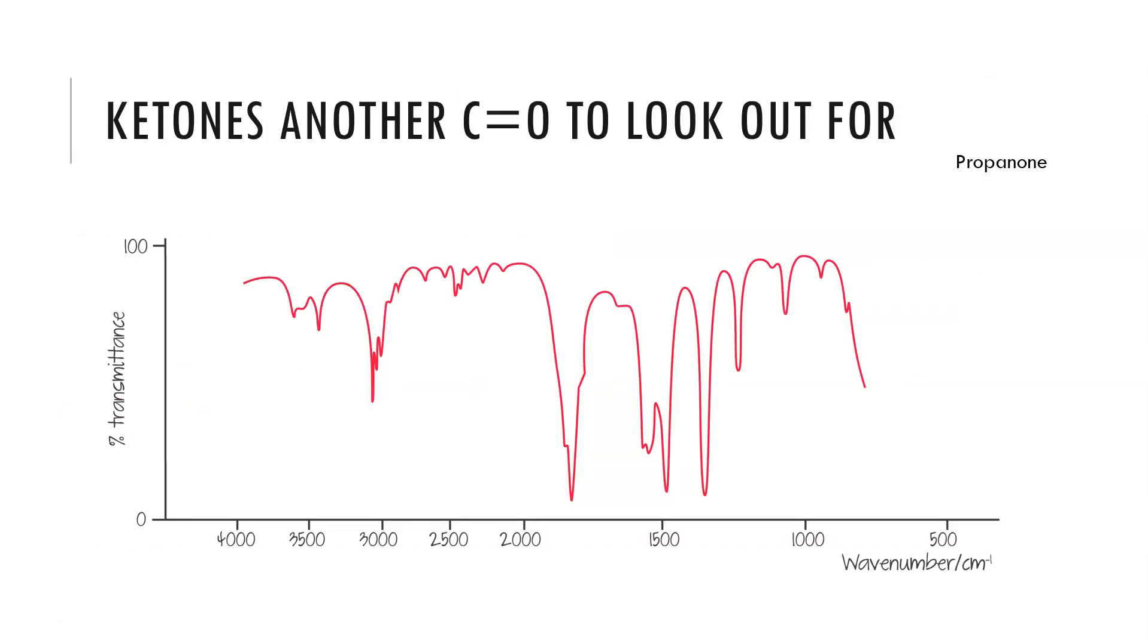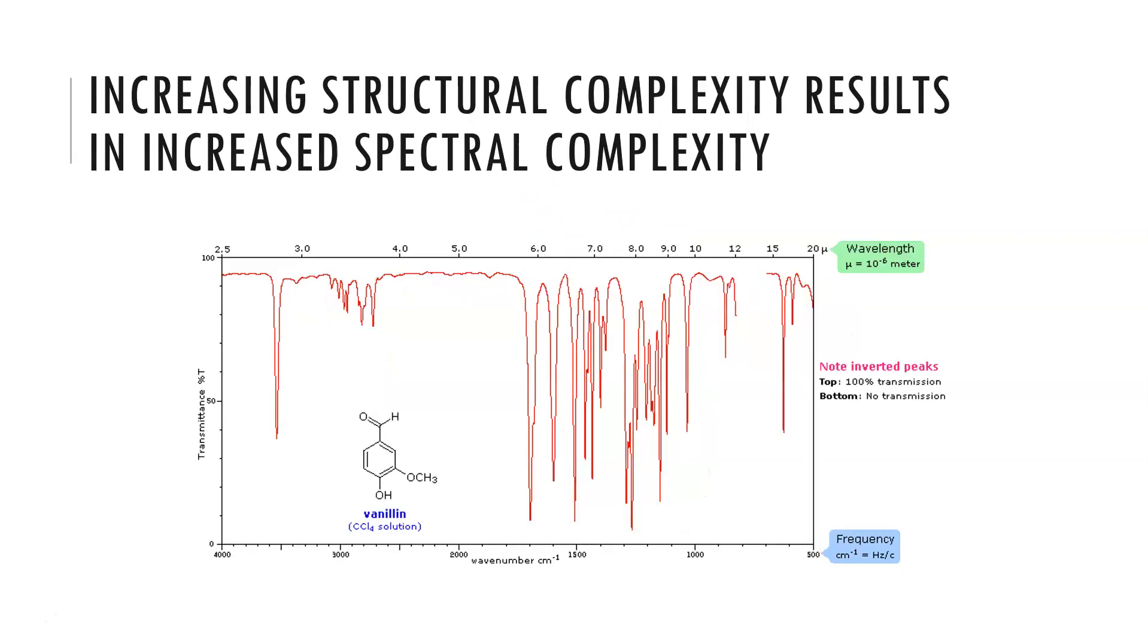When we look at ketones this is another C=O that can turn up. It will be in a slightly different area, but this strong absorption below 2000, between 1500 and 2000, is characteristic of a C=O. We will see this for a number of different functional groups. If we increase the structural complexity we get increased spectral complexity—we will see more lines for the more bonds that undergo transitions with infrared radiation.